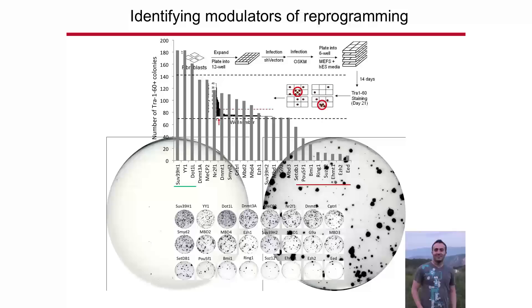Among about 22 genes tested, we asked which ones, when shut down, make stem cell conversion more or less efficient. Some genes, when turned off, really inhibit reprogramming — these are important genes. Others, when turned off, actually result in more reprogramming, meaning we can use these genes to make the process more efficient.